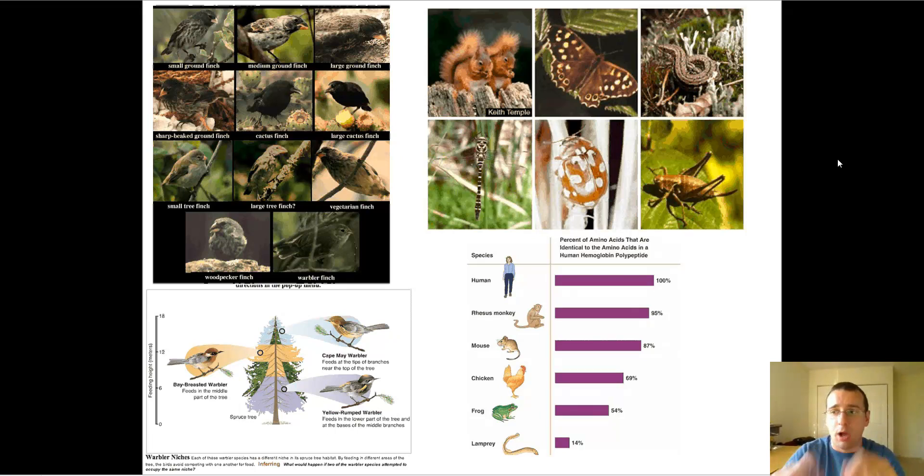So the idea is can the cactus finch and the large cactus finch actually have offspring with each other? And if they have offspring, is it possible for them to actually produce offspring that can go on to also reproduce and have babies? In other words, think about a lion and a tiger. They actually can have babies, and they form something that we call a liger, but that liger is infertile. He cannot have babies.